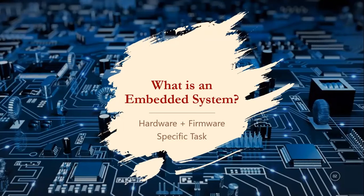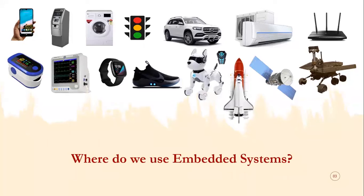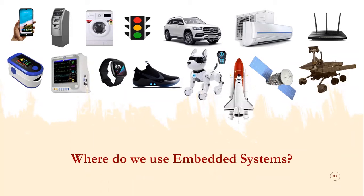Where do we use embedded systems? Rather, the question should be: where do we not use them? Embedded systems are used everywhere in our day-to-day lives — from the mobile phone in your hand to complex space rovers and spacecraft. Examples include mobile phones, ATM machines, washing machines, traffic signal controllers, automobiles, air conditioners, modems, routers, switches, medical instruments like oximeters and heartbeat monitors, smart watches, smart shoes, robotics, robotic toys, and spacecraft.